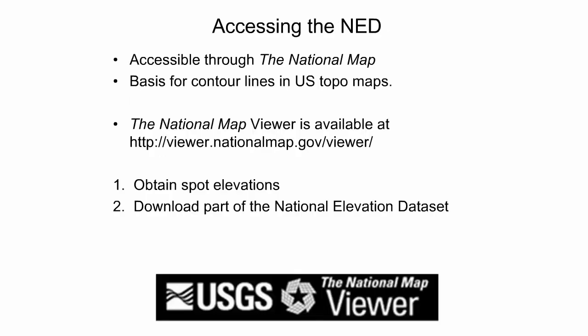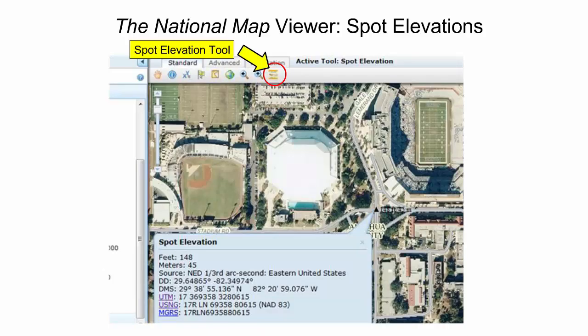The National Map comprises a variety of products and services that provide the nation with access to base geospatial information to describe the landscape of the United States and its territories. It allows online access to the National Elevation Dataset, which is the basis for contour lines in US Topo maps. Spot elevations can be accessed anywhere on the map by using the spot elevation tool in the National Map online viewer, regardless of contour location.